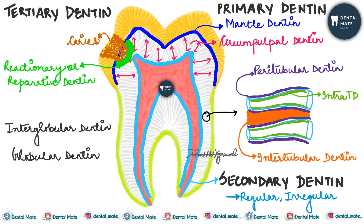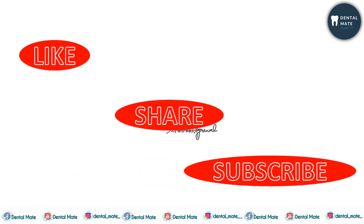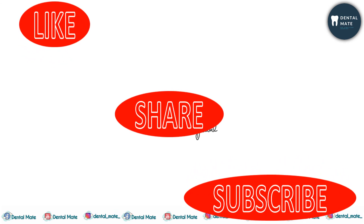Tertiary dentine is also known as reactionary or reparative dentine, formed as a response to irritation from caries, erosion, abrasion, attrition, or cavity preparation. Interglobular dentine contains hypomineralized areas between mineralized globules, while globular dentine is hypermineralized. In the coming videos, we'll be dealing with each of these dentines in detail — stay tuned and thank you.